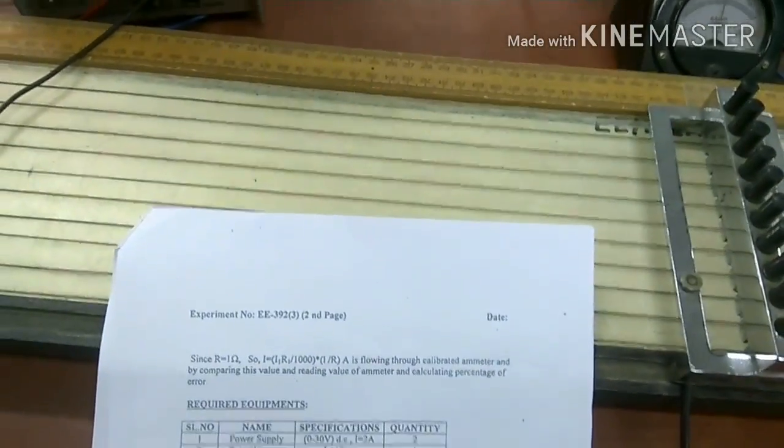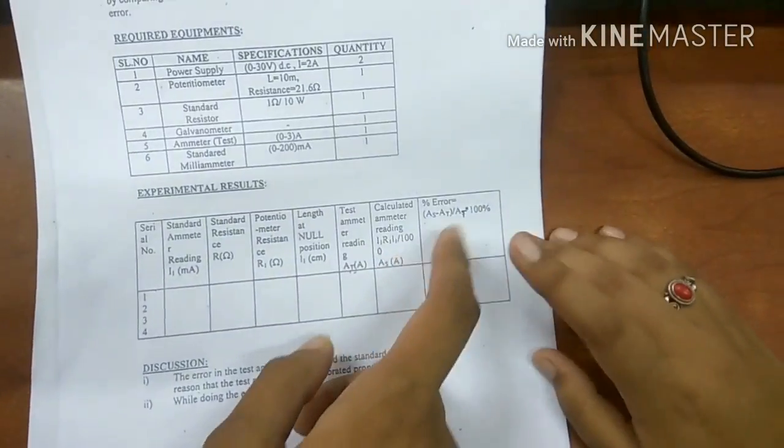This is our test ammeter reading and the next is we need to calculate AS as we need to find with the formula as given.